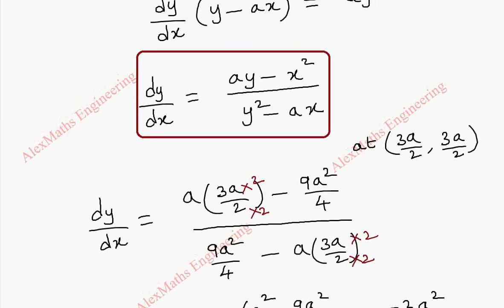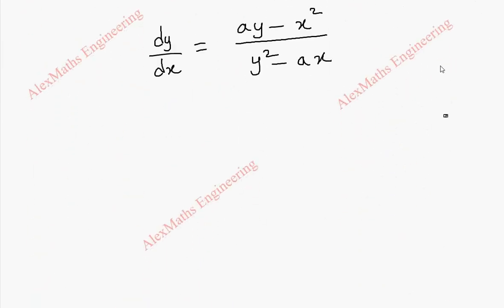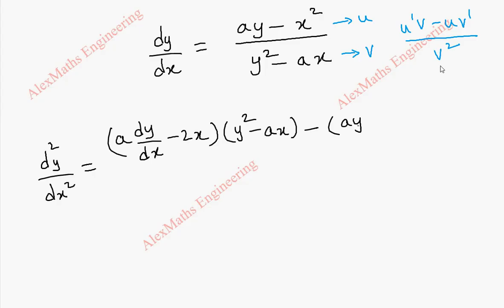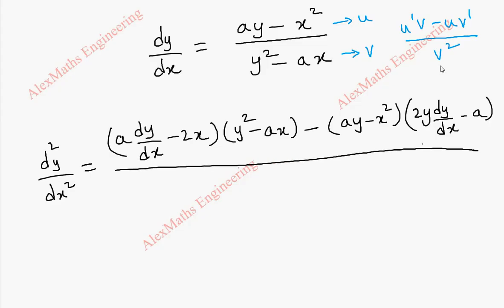Now we are going to find the second differentiation using this dy by dx, and we are going to apply the quotient rule. This is our u and this is our v. When it is u by v form we use (u dash v minus u v dash) divided by v square. So d square y by dx square: u dash — the differentiation of the numerator — will be a into dy by dx minus 2x, into v which is y square minus ax. Minus u which is ay minus x square, into v dash. The whole thing divided by v square, that is (y square minus ax) whole square.